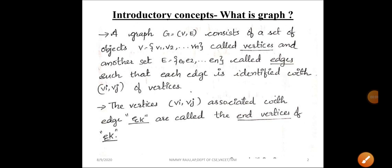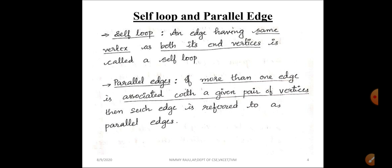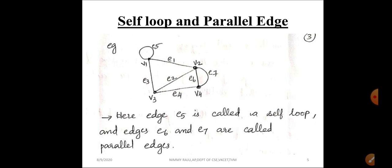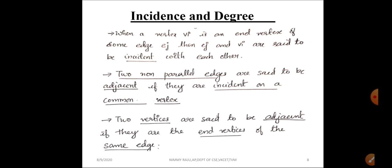Hello dear students. Welcome. In the last class we discussed some introductory concepts regarding the graph: the basic definition of the graph, how a graph can be represented diagrammatically, then definitions like self-loop, parallel edges, simple graph, finite and infinite graph. Today we are going to discuss the topic incidence and degree.